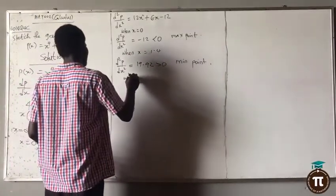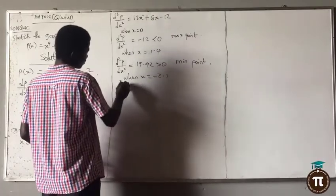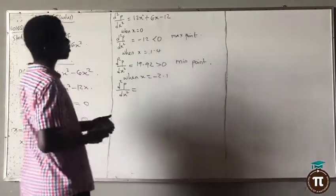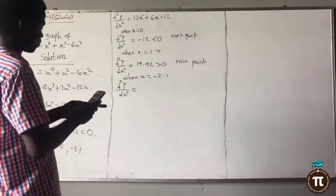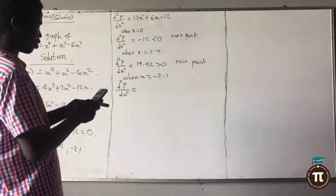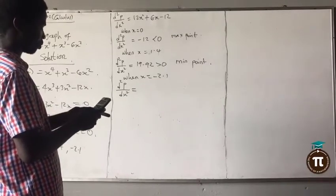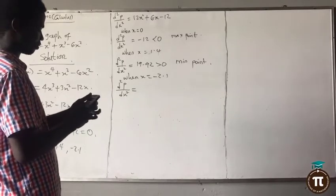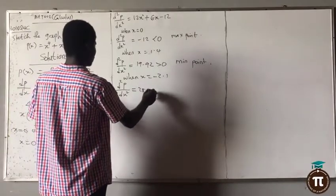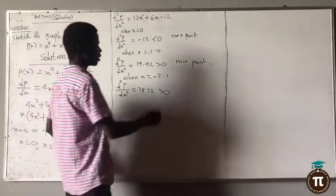When x is negative 2.1, d²p/dx² equals: 12 multiplied by (−2.1)² plus 6 multiplied by (−2.1) minus 12. The answer is 28.32, which is also greater than zero — so this is also a minimum point. So we have two minimum points.